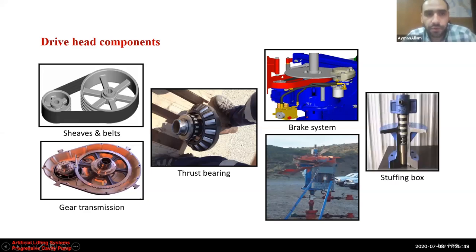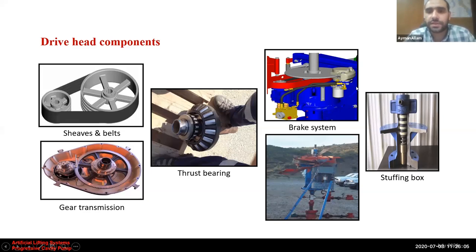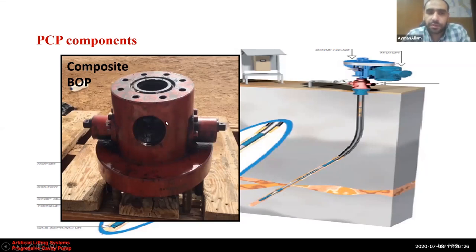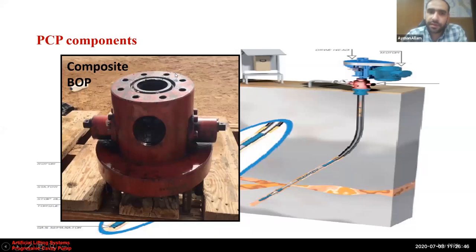The stuffing box is the last component in the drive head. Its function is to provide a seal against the polished rod using rubber elements and prevent leakage of fluids. The last surface component is the composite BOP. Its function is to provide connection to the flow line through a port and enable securing the well for maintenance work — the rams are closed to seal against the polished rod. The composite BOP is placed just below the drive head. In summary, the surface components are the electric panel, the drive head, and the composite BOP.